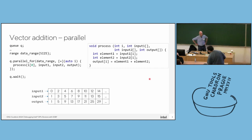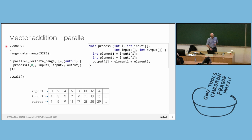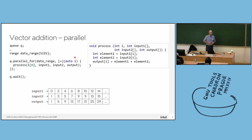Here is how it would look in SYCL. We first create a queue — a container where we submit jobs. The SYCL runtime takes those jobs, distributes them among threads, and handles scheduling. We submit a task to run in parallel to this queue, and the task is specified by a lambda. The lambda takes i as the parameter, specifying the index of the data item being processed, and the body does the same: processing input and producing output.